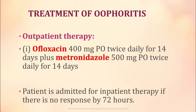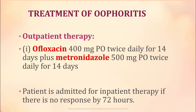The treatment for oophoritis: outpatient therapy includes ofloxacin 400mg orally twice daily for 14 days, along with metronidazole 500mg orally twice daily for 14 days. The patient has to be admitted for inpatient therapy if there is no response after 3 days despite taking ofloxacin and metronidazole.